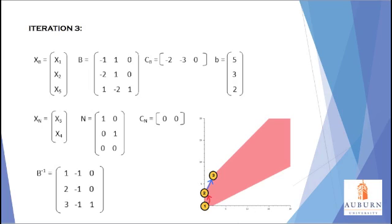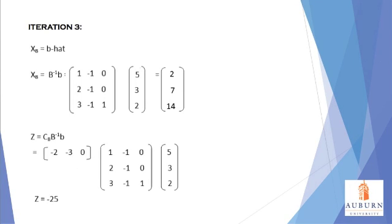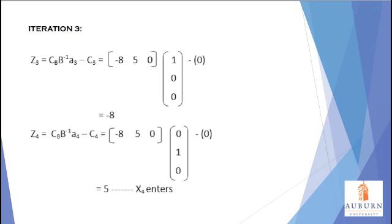We can see from the graph in the bottom right corner that with the addition of X1 into the basis, it will shift the iteration point in the X1 direction, which should improve the objective function value. We calculated the inverse of the B matrix again. B-hat is then calculated, reflecting the values for the new basic variables. The new objective function value is then calculated with the new matrices, and we can see that the value is negative 25, which marks an improvement.